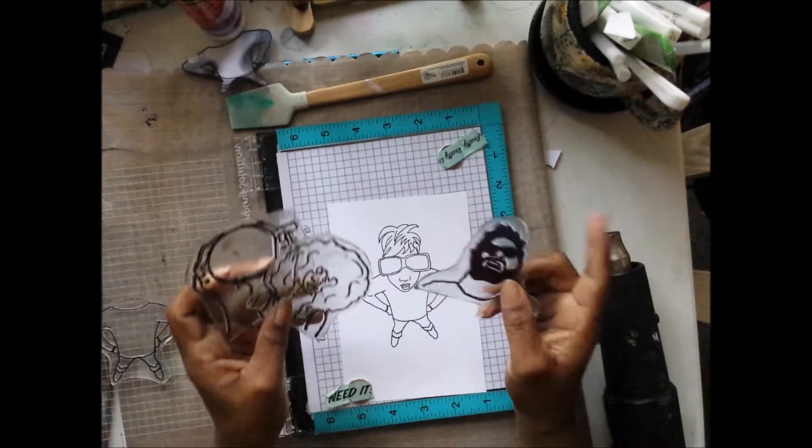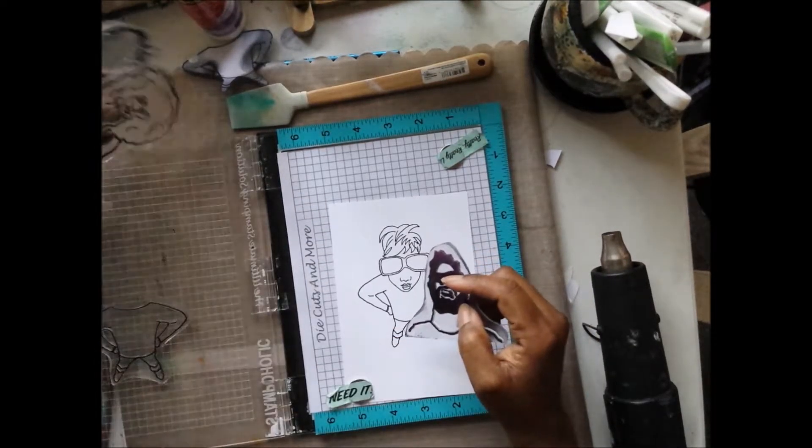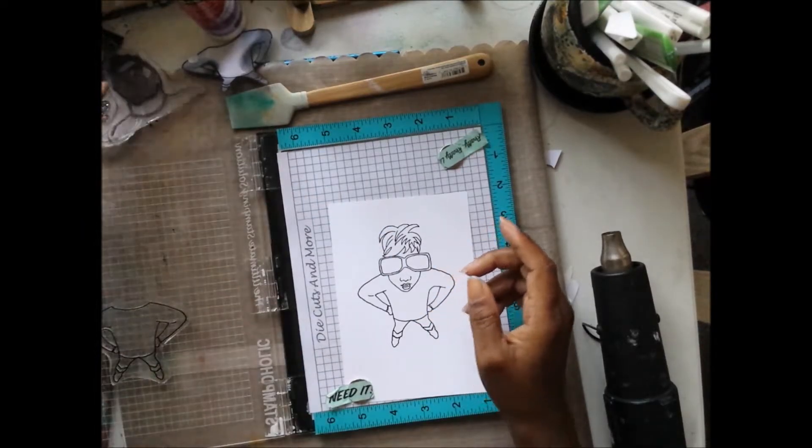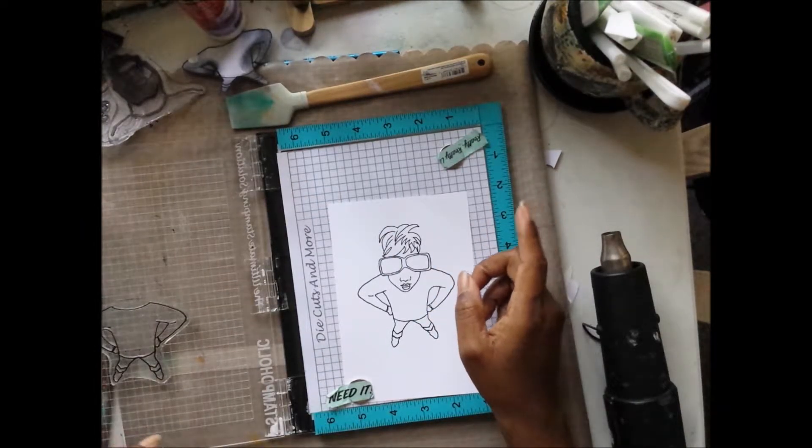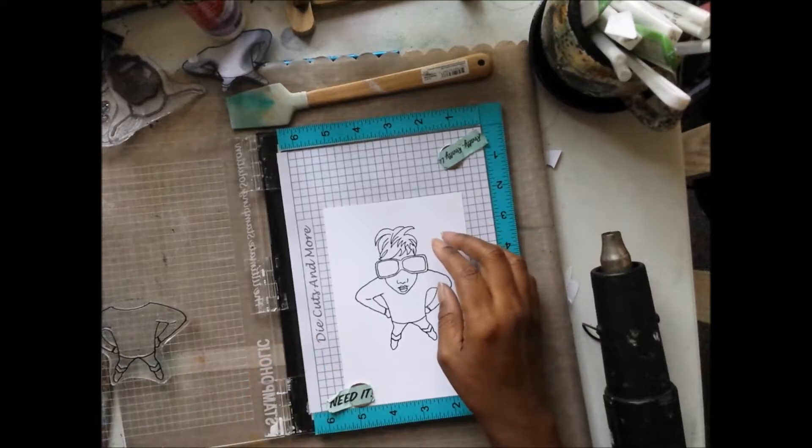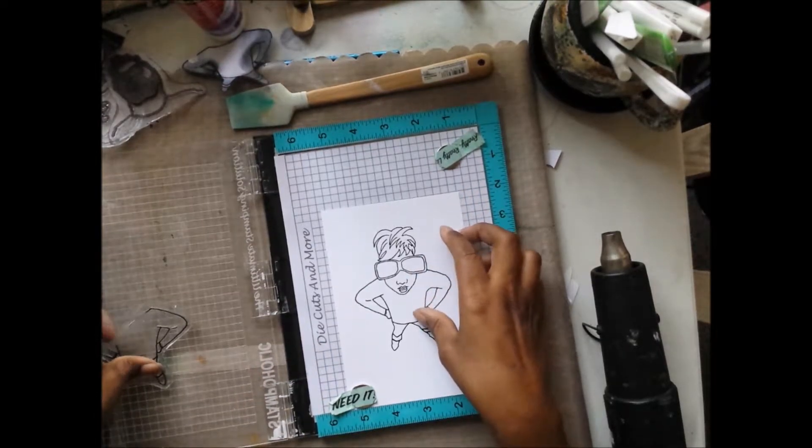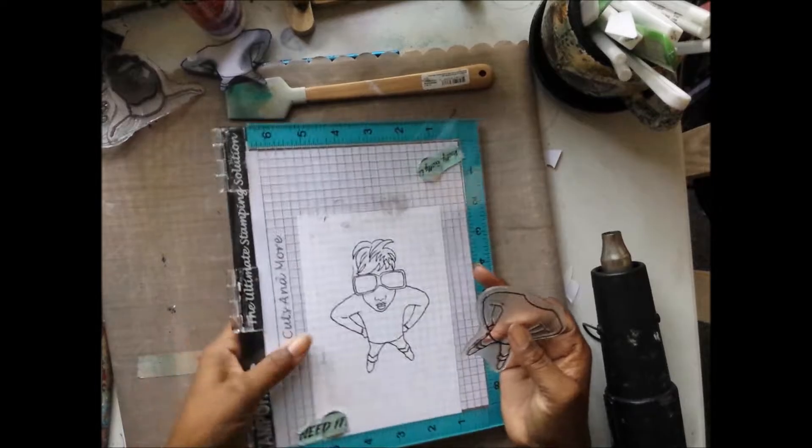We got, like I said, Dude. And we got Cuppa. And we got Big Hair. These are all new stamps that are in the Etsy shop if you want to go ahead and check those out.